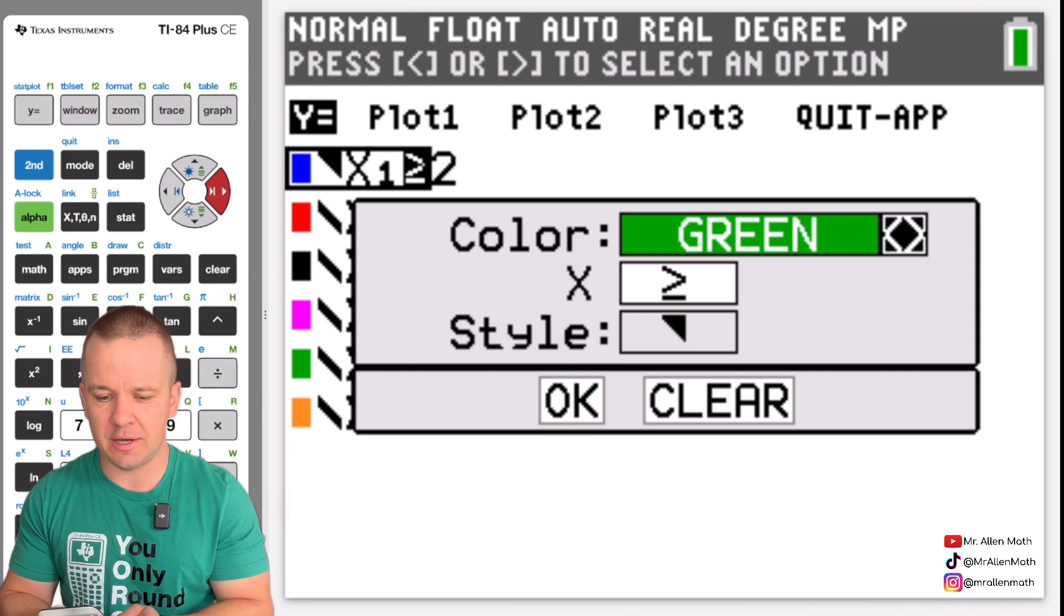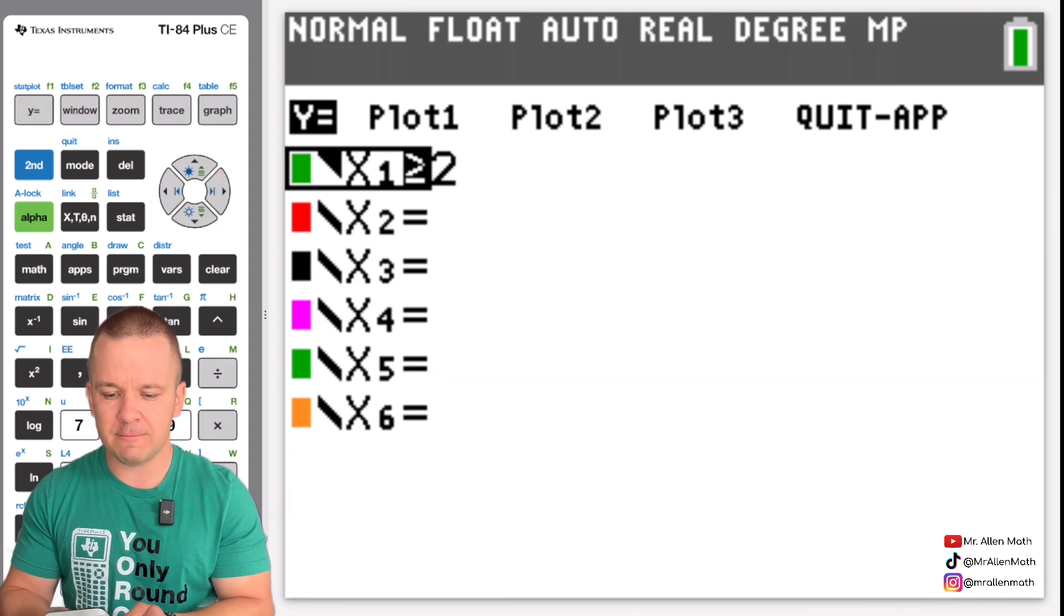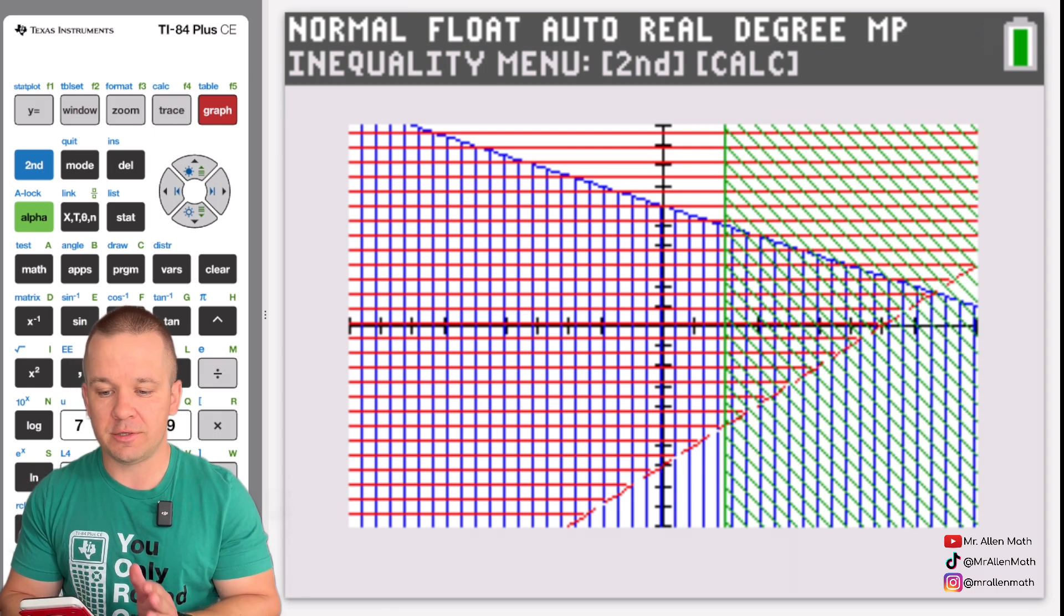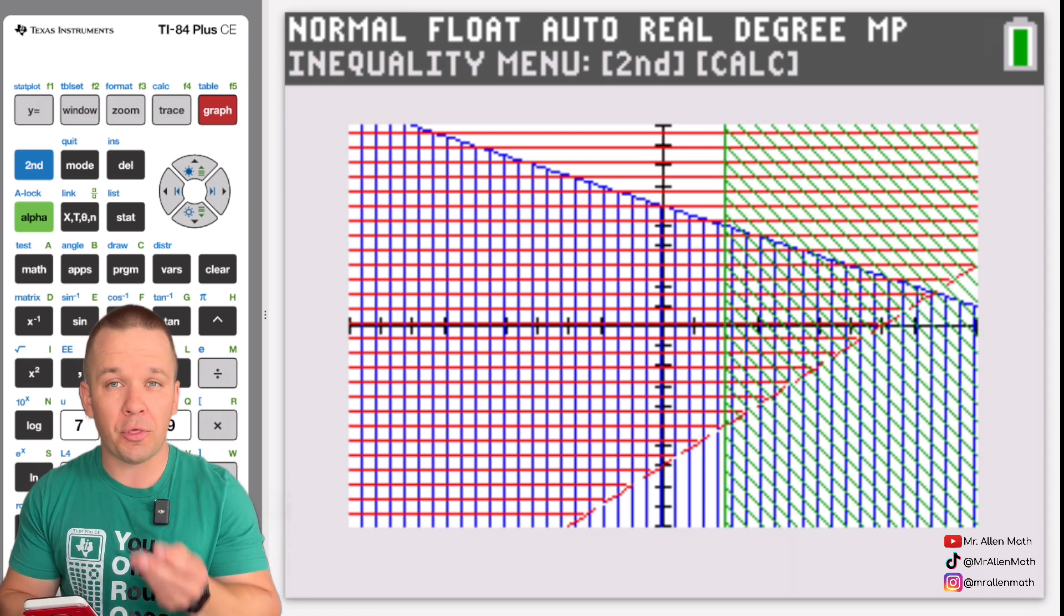All right hit enter and okay I think we probably want to change our color here right that would make a little more sense so let's go back to that go back to my x equals and I'm going to change this guy let's go with oh let's go green. Green is a little more contrasting I think. So hit okay on that and then hit graph now we'll have our three different colors.